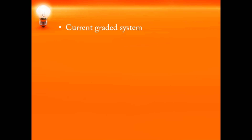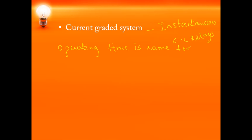Next is the current graded system. Instead of setting the time, in this type of system we set the current — that is the plug setting. In a current graded system, the relays are set to pick up at progressively higher values of current towards the source. The type of relay used here is the instantaneous overcurrent relay, and the operating time is the same for all the circuit breakers — it is not changed.